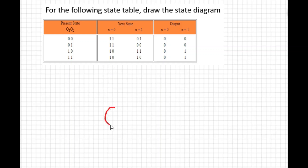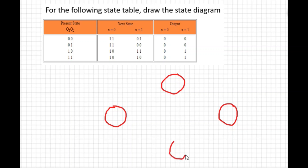To draw the state diagram, first draw four circles because we have four states. In each circle, write the present state: 00, 01, 10, and 11.